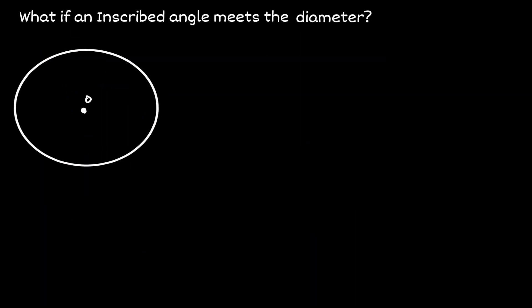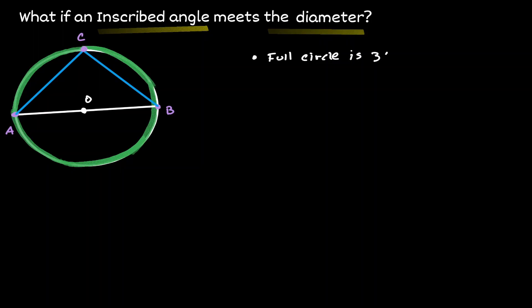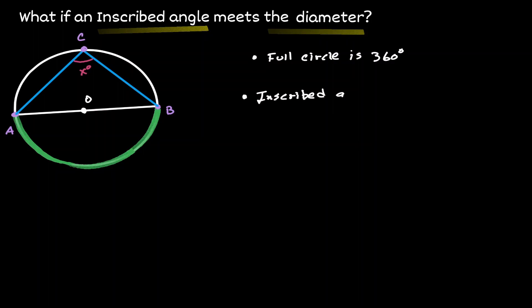Let's look at another scenario. What would happen when an inscribed angle intersects the diameter of a circle? Let's start by drawing the diameter of the circle and call those intersections A and B. Now let's consider an inscribed angle that also intersects at A and B. We know that a full circle is 360 degrees, and this inscribed angle — let's call it X — intersects an arc that is half of that circle. Remembering that an inscribed angle is half its opposite arc, we can conclude that angle X has a measurement of 90 degrees.